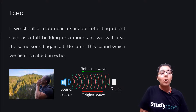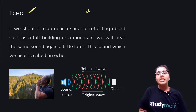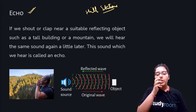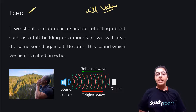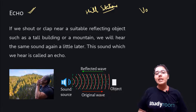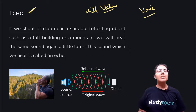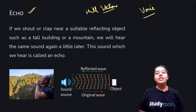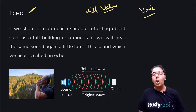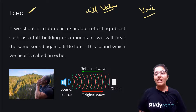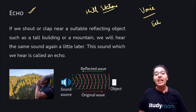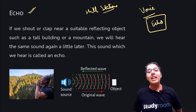So what is echo? Have you ever gone to hill stations or any mountain area? What happens is that your voice comes back — it reflects back, it bounces back. For example, you say 'hello' and then you hear the same voice again. This voice which comes back again and again is your echo — we call it an echo.